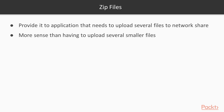One of the most basic things you can do is work with zip files. You might need to provide zip functionality in an application that needs to upload several files to a network share. Being able to zip several files and upload a single zip file makes more sense than having to upload several smaller files.